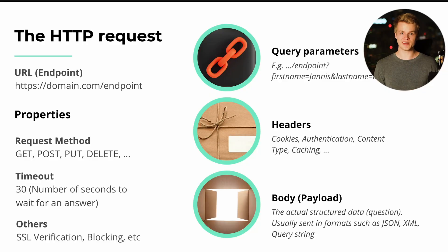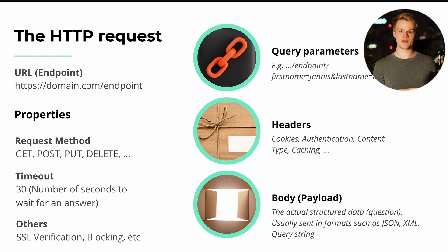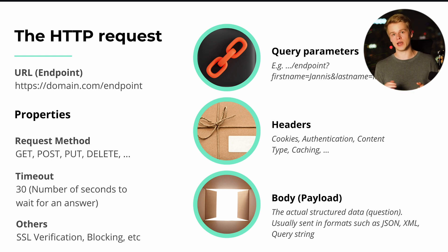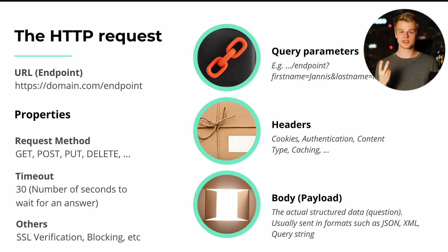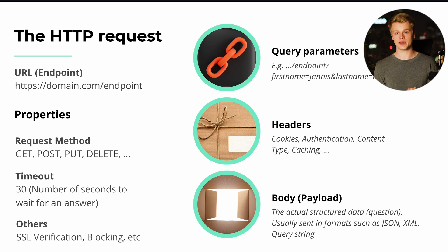That JSON information goes into the last part: the body, also called the payload. This is what's inside the package — all of the information you want the receiver to have, use, store, or act on. It comes in a structured data format, most commonly JSON, but also XML or even a query string within the body. You can send text too. Whatever you send, you always need to give it context so the receiver can understand it.